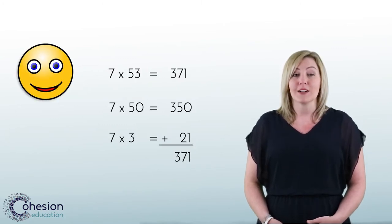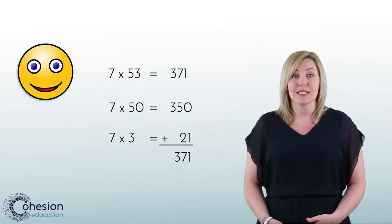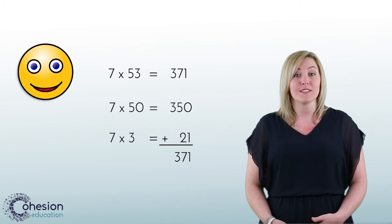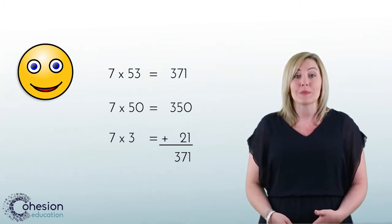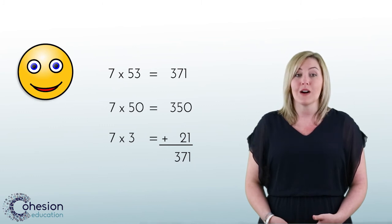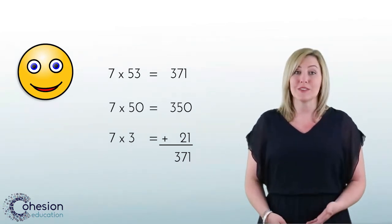Looking back at our example, we split 53 into 50 and 3. This is because students can easily multiply 50 because it is a multiple of 10 and 3 because it is so small. Where students often go wrong is choosing two numbers that are not easy to multiply but still equal 53, for example, 49 and 4.